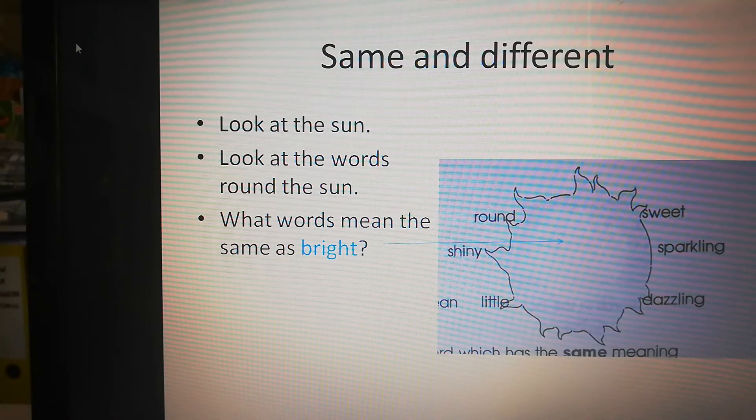We're talking first about Same and Different. Look at the sun. Here's that picture. And we have words around the sun. Got shiny, round, sweet, sparkling, dazzling, little. You want to know what words mean the same as bright. As bright. Bright like a bright light. It's nice. You can see it. It's shiny. It's sparkling.